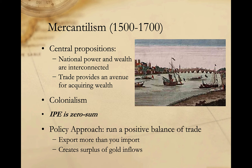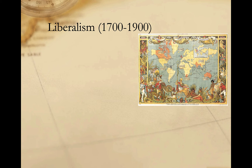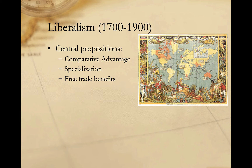Mercantilism dominated thinking about international political economy for more than 250 years, but the growing power of the British empire and the industrial revolution sparked a fundamental transformation. Beginning in the middle of the 1700s, a new school of economic thought emerged — liberalism — advanced by thinkers like Adam Smith and David Ricardo. The central propositions of liberalism were that free trade benefits all parties involved, and that specialization and trade could benefit everyone through comparative advantage. It was the idea that international political economy was a positive-sum game — a rising tide that raised all boats. By specializing and trading, countries could consume more and more diverse goods than if they attempted to be self-sufficient.